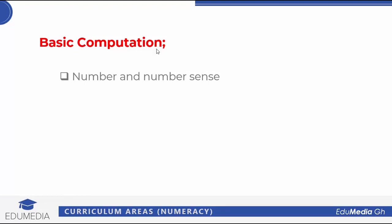The next aspect of basic computation is number operations. This talks about addition, subtraction, division, and multiplication aspects of mathematics. Then the next aspect of basic computation is patterns and relations.